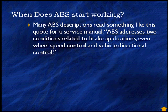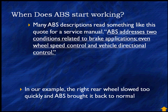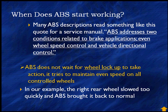From a service manual: ABS addresses two conditions related to brake applications — even wheel speed control and vehicle directional control. The real key here is directional control. In the example we just looked at, the right rear wheel slowed too quickly and the ABS brought it back to normal. ABS does not wait for wheel lockup to take action; it tries to maintain even speed on all control wheels.